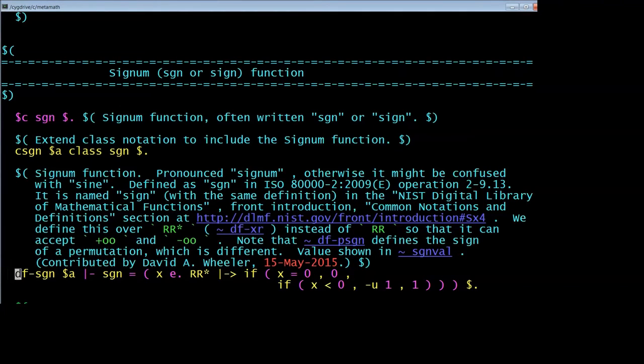And then actually define it with a preceding comment that explains a little bit more about it. You'll notice that by convention, the label for defining a function is just df- and the name of the function. It's $a, because we're defining something. We're saying that sgn is a function where x is a member of rr star, and it maps that value to this expression to the right, which simply says if x is 0, it's 0. If it's less than 0, it's minus 1. Otherwise, it's 1.